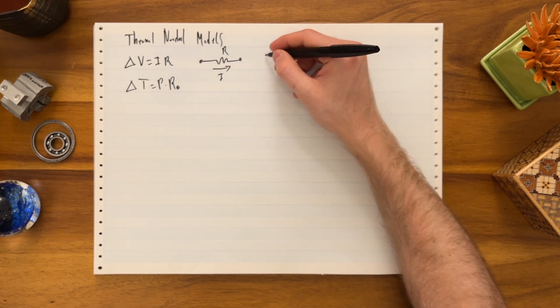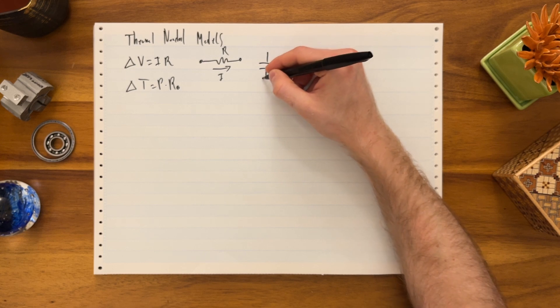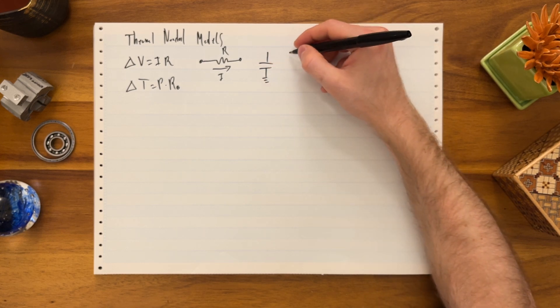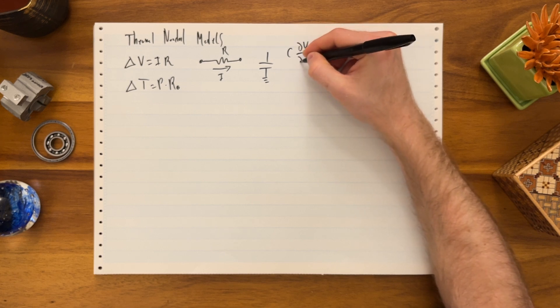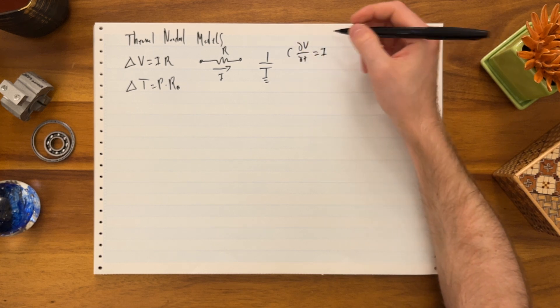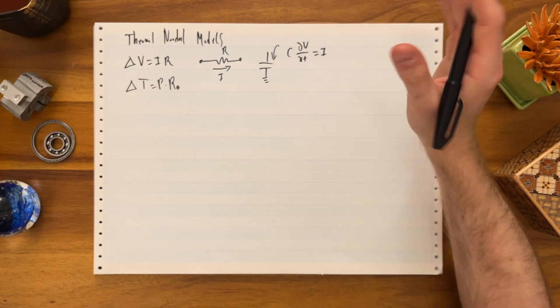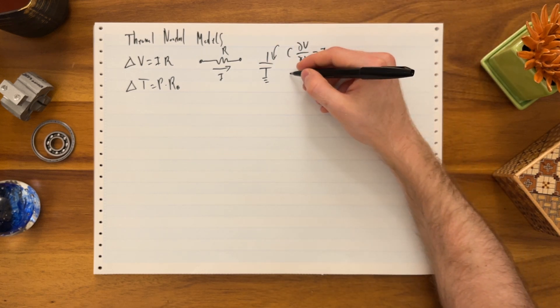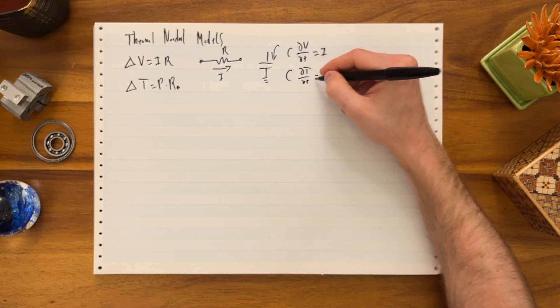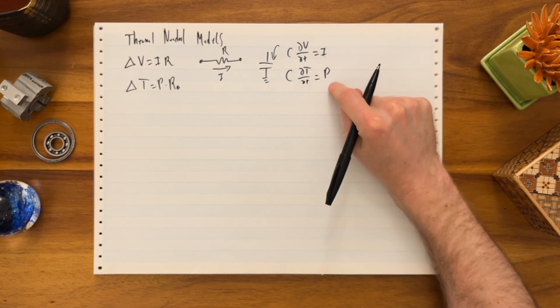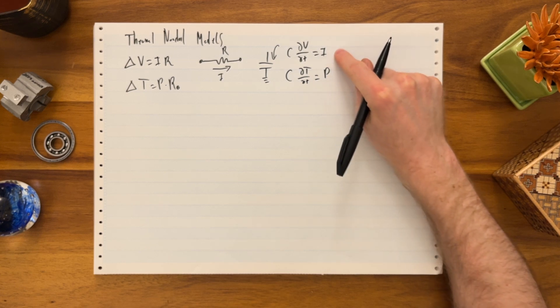Similarly with capacitors. If you have an electrical capacitor, you might have capacitance times the change in voltage with time equals the current. Current flowing into the capacitor charges it up. Similarly, thermally, the total heat capacity of a node, delta temperature delta time, equals power flowing into it. And this is conservation of power. This is conservation of charge.